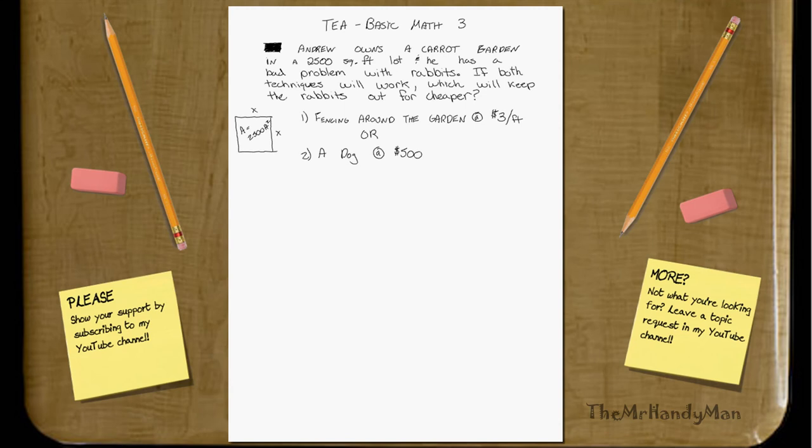This is TEA Basic Math 3. The problem is: Andrew owns a carrot garden in a 2500 square foot lot and he has a problem with rabbits.